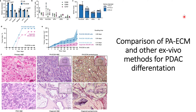They then checked how pancreatic tumor cells are expressed and differentiated across the nude mice models using H&E staining. In the case of PAECM, H&E staining shows that pancreatic cancer cells are poorly differentiated. For organoid H&E staining, the pancreatic cancer cells are well differentiated and form duct-like structures. These results indicate that PAECM behavior is similar to the pancreatic tissues observed in patients affected with pancreatic cancer.